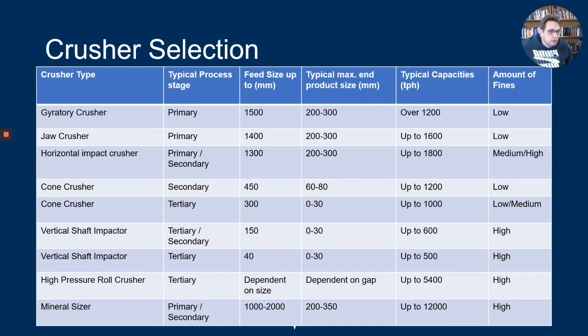The horizontal impact crusher uses an impact crushing mode—basically it flings the rocks against a type of impact plate. It handles fairly large rocks, has high capacity, and produces quite a lot of fines. Then a cone crusher is used in a secondary crushing role with fairly good reduction ratios. It could also be used in a tertiary application.